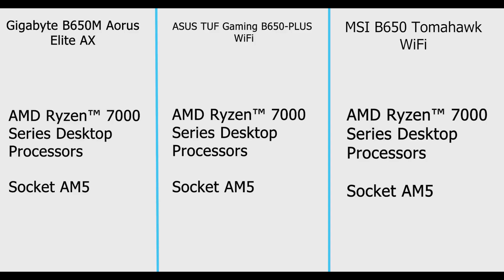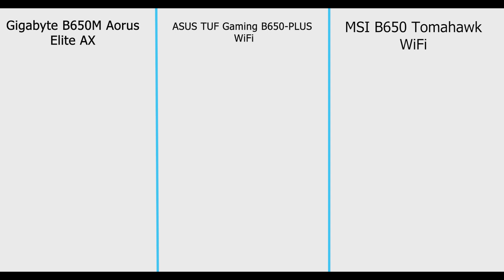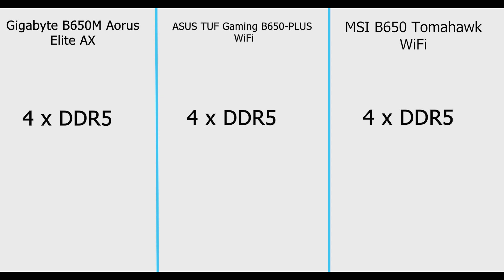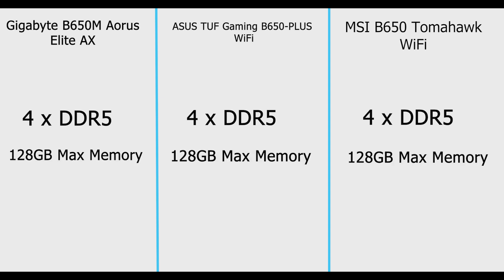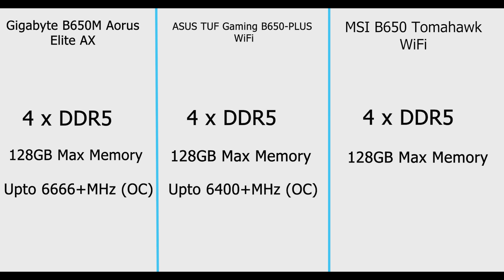All three motherboards support AMD Ryzen 7000 series latest desktop CPUs with socket AM5. Each comes with four DDR5 RAM slots supporting up to 128 GB DDR5 RAM. MSI claims to support RAM speeds up to 6600 MHz in OC mode, Gigabyte supports up to 6666 MHz in OC mode, and ASUS supports 6400+ MHz in overclocking mode, though 6400 MHz is the safer reference point.